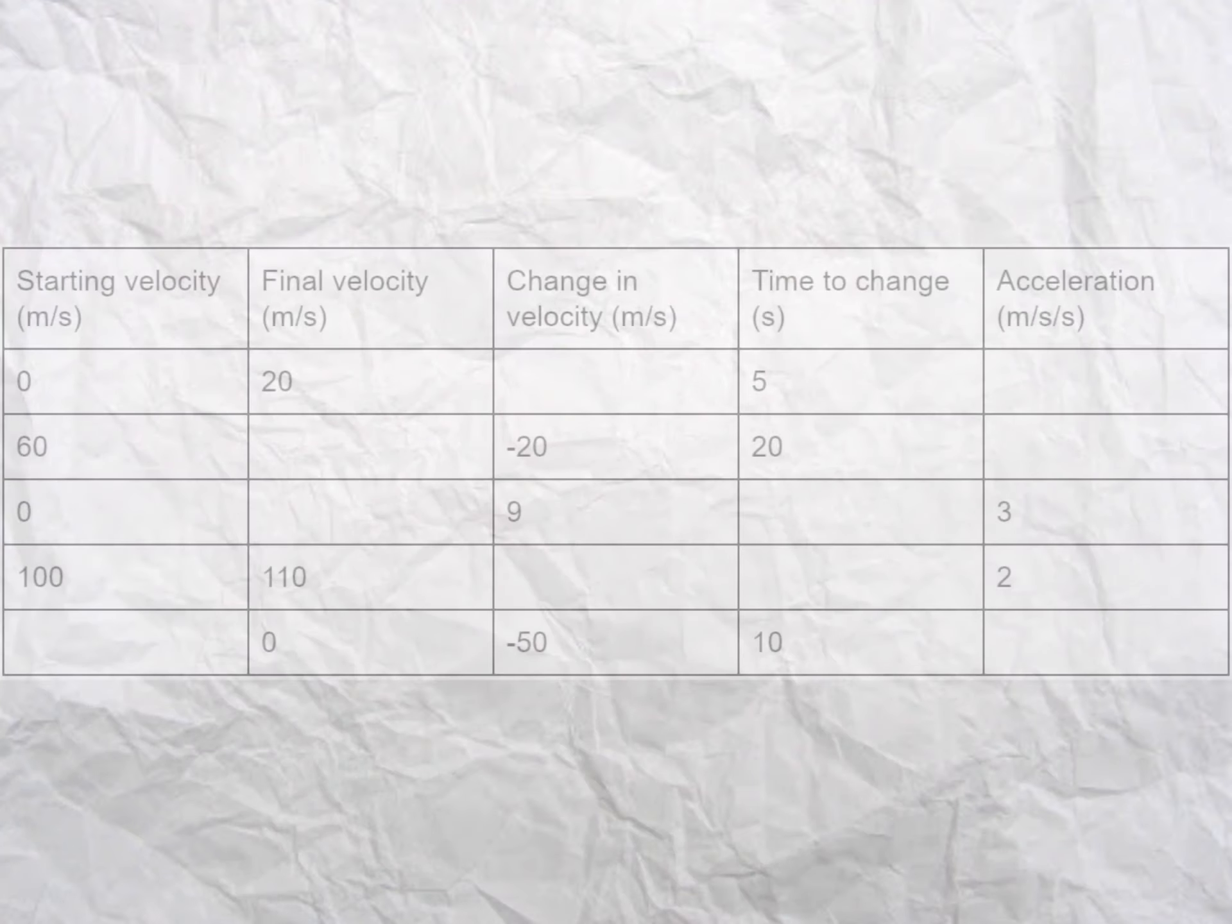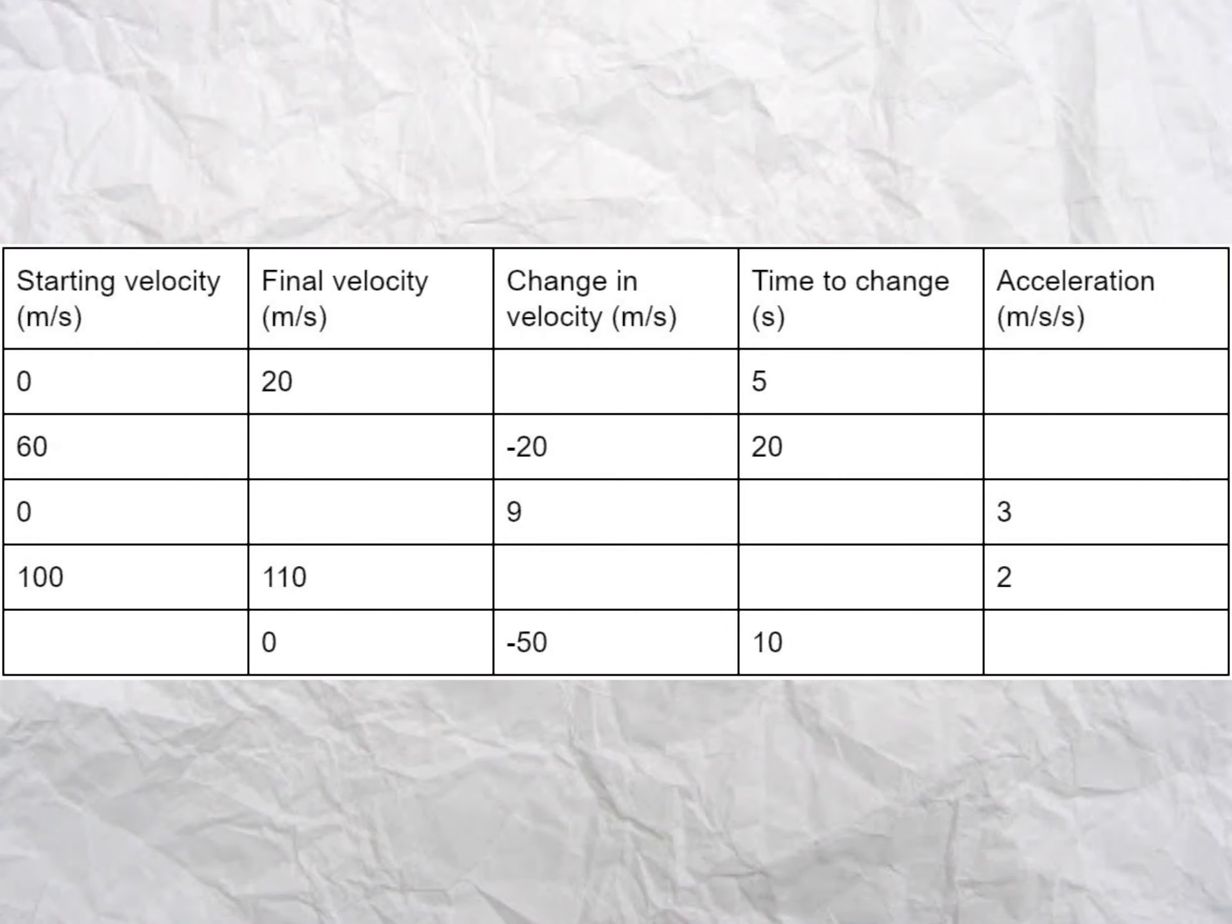Question 4. The ubiquitous table. Line 1 wants the change in velocity from 0 to 20 meters per second, so that's 20 meters per second, and the acceleration, which is the change in velocity divided by time, or 20 divided by 5, equals 4 meters per second per second.